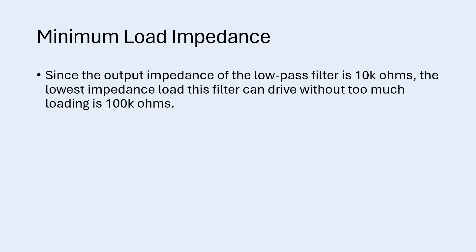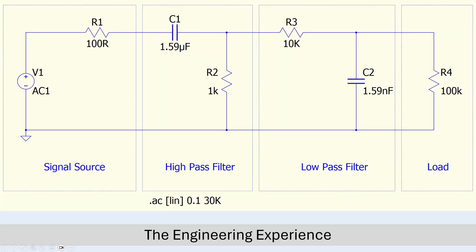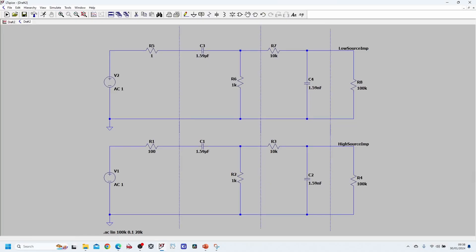Now we can plug in all these numbers into our circuit. We get the following design for the filter: we have our source with the 100 ohm resistance, we have our high pass filter with a 1.59 microfarad capacitor and a 1 kilo ohm resistor in parallel with the driving circuit, then we have our low pass filter with the 10 kilo ohm series resistor and 1.59 nanofarad capacitor, and finally we have the minimum load impedance of 100 kilo ohms. This is the complete design for the filter in this exercise.